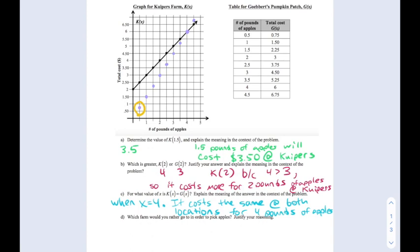Well, if you're looking and see that some of the function values are lower for one of the functions, like in this case, remember these are my g(x) values over here, this g(1/2) is lower than the k(1/2), so it's more affordable to go to Gobert's Pumpkin Patch if you're only buying half a pound of apples. Same thing can be said for all of these points over here.